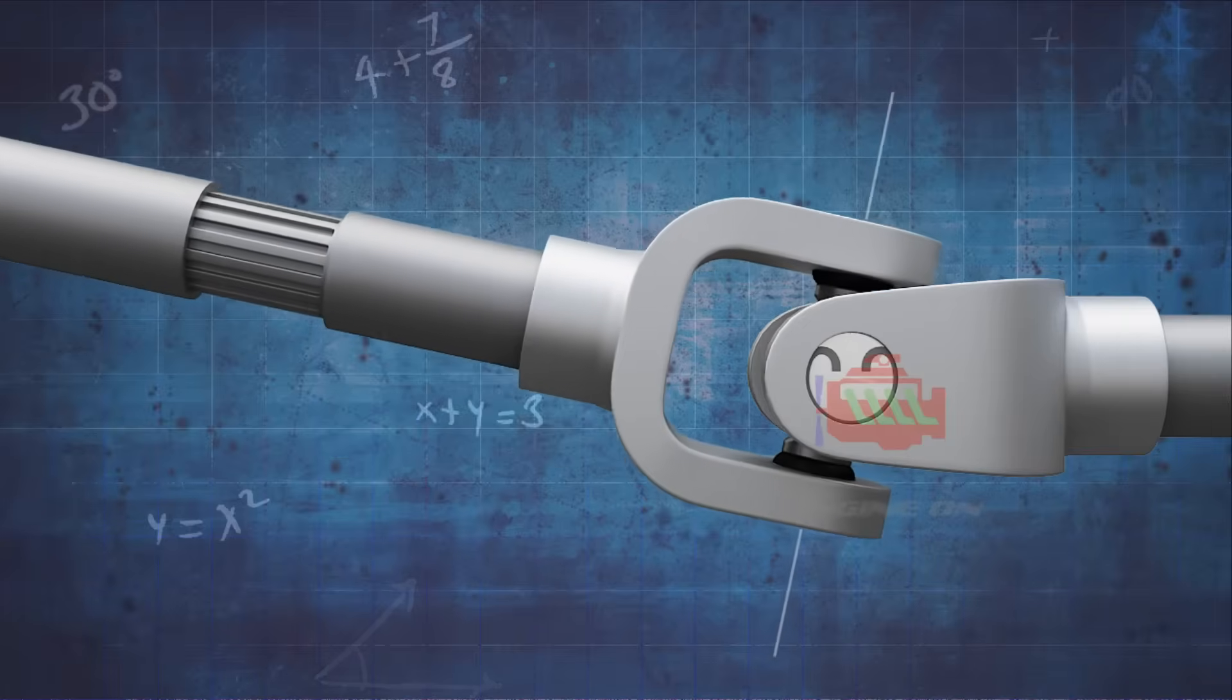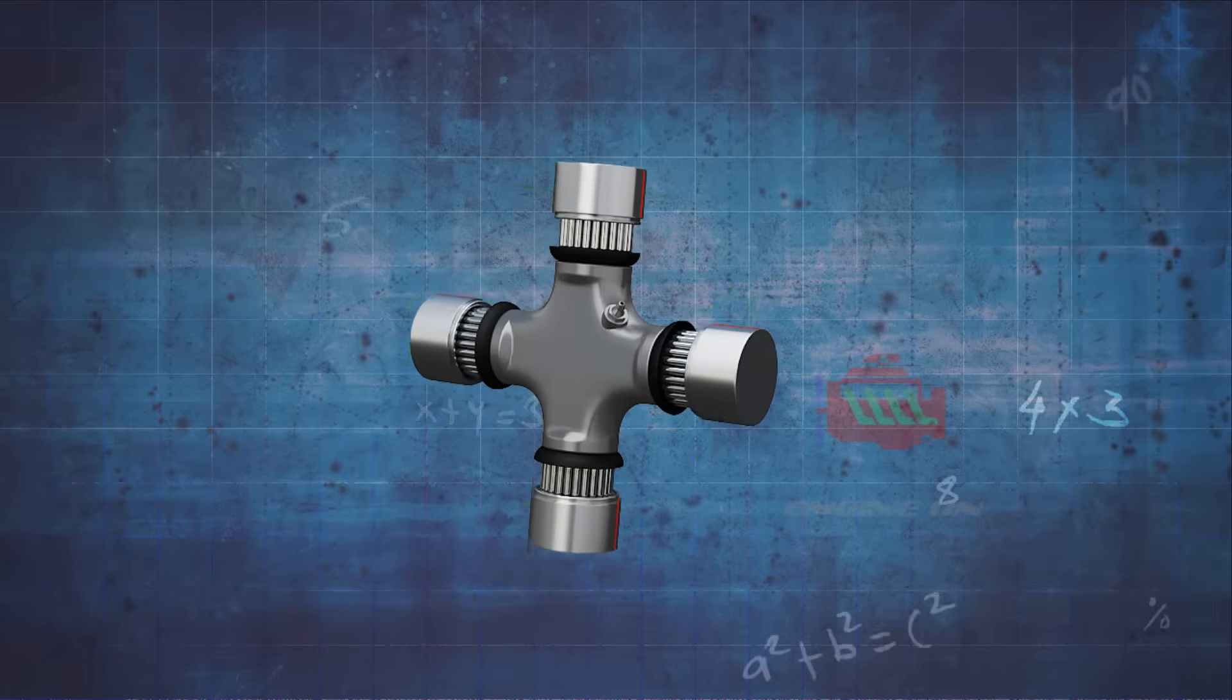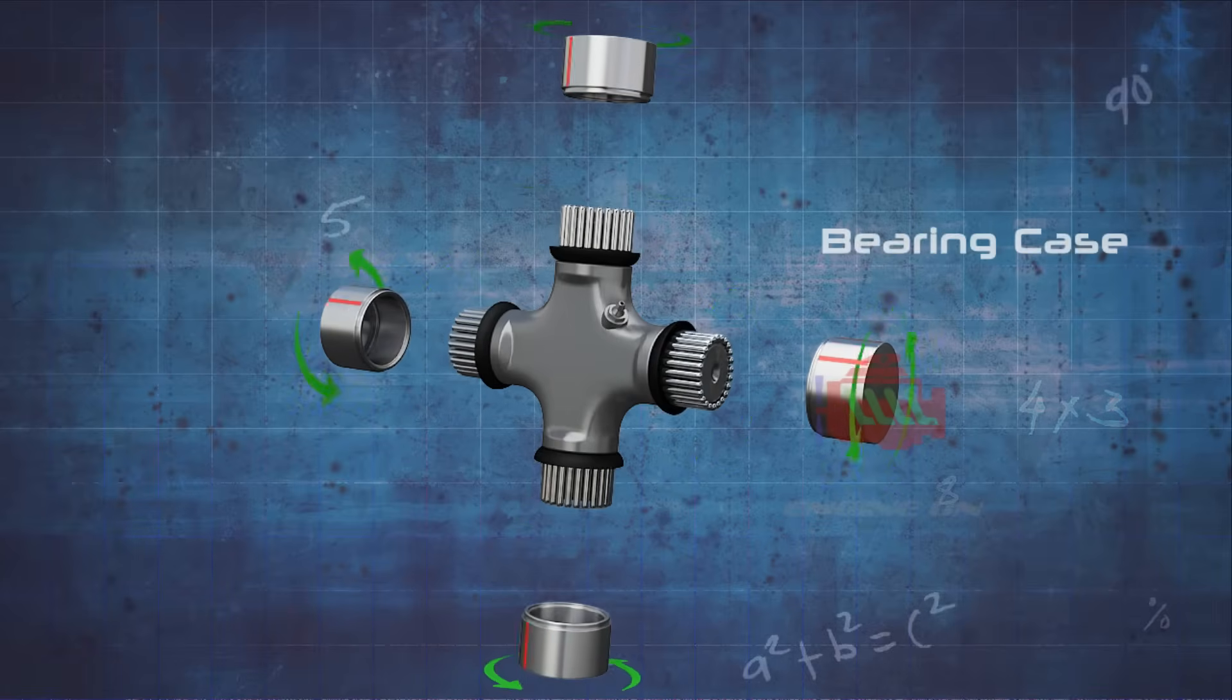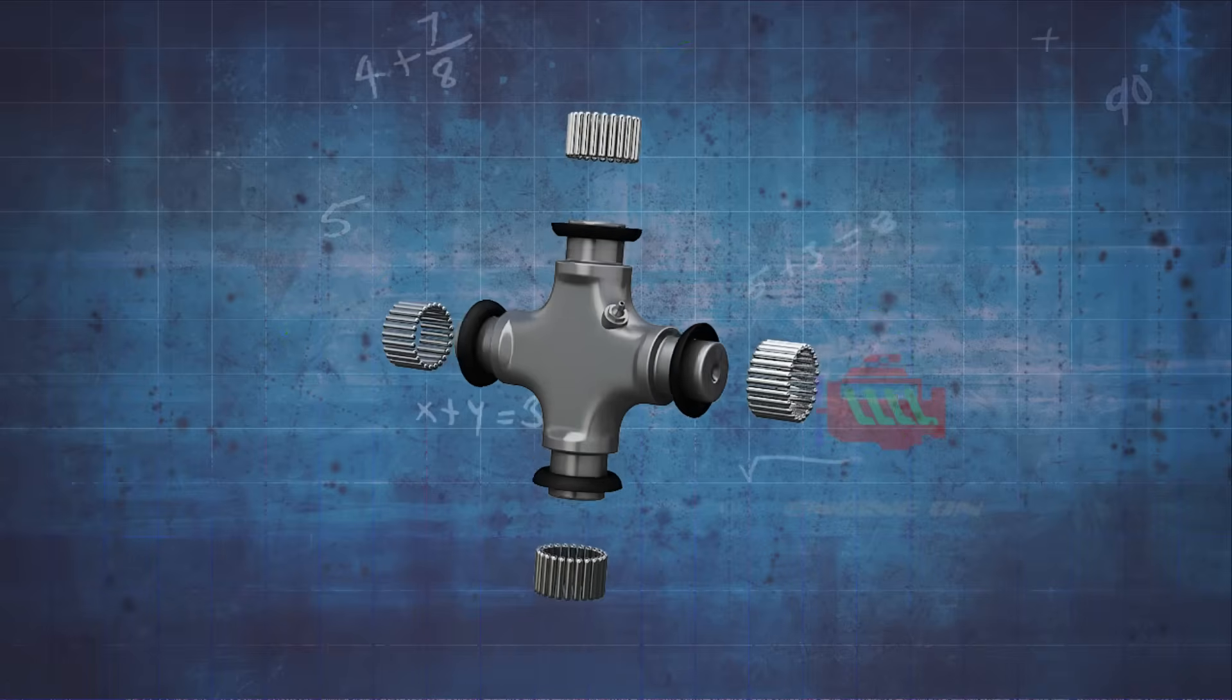Typically composed of two yokes attached to the shafts and a cross piece connecting them, with bearings at each intersection point of the cross and yokes. A spider cross is part of a differential gear mechanism.